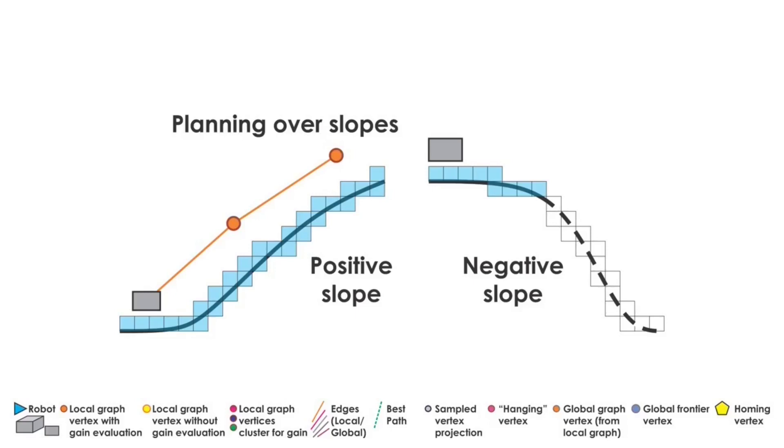For flying robots, only collision checking takes place. To check these conditions, the edge is subsampled and each point is projected downwards. If all the segments of the projected edge are collision-free and within the inclination limits, the edge is considered to be admissible and added to the graph.